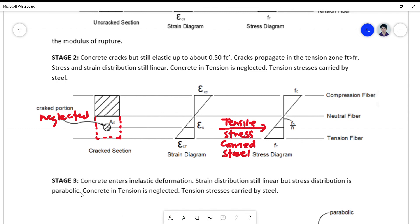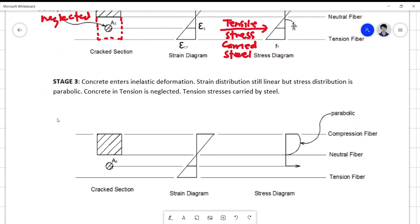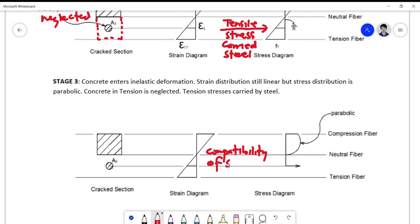So for stage three, the concrete enters the inelastic deformation. So the part of the concrete in compression is beginning to become unstable, and the strain distribution is still linear, but the stress distribution is no longer linear. So notice that here, compatibility in strain is still true, but compatibility in stress is no longer true. So from the original straight line, your stress distribution now here in the compression zone becomes almost parabolic.